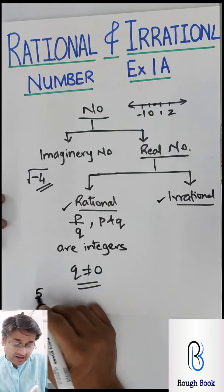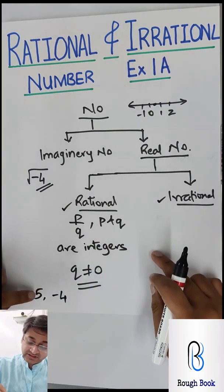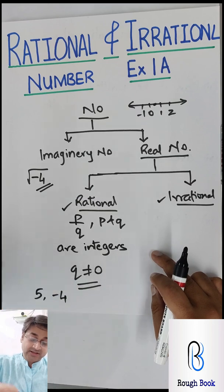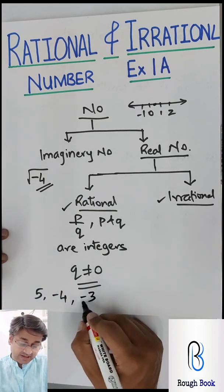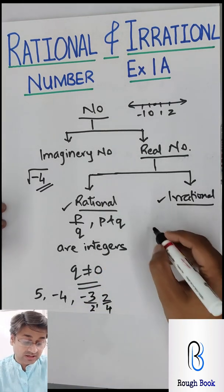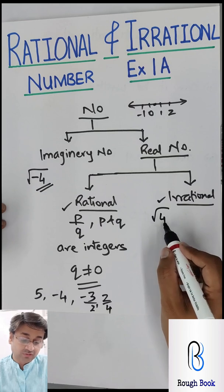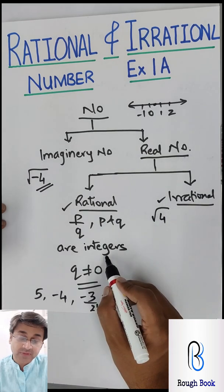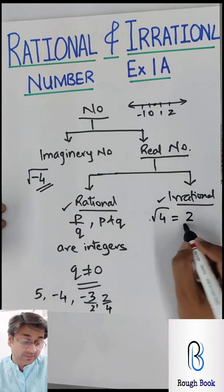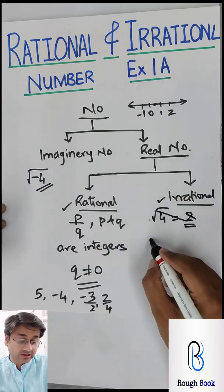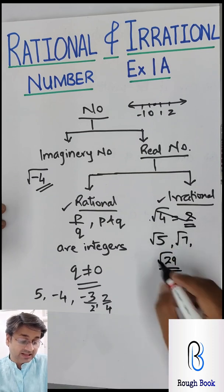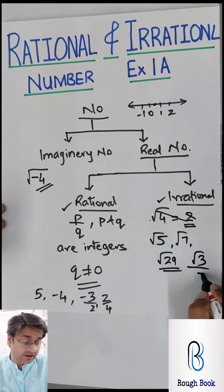Basic examples: 5 is rational, negative 4 also rational because these are all 5 by 1, negative 4 by 1. Both are integers and denominator is not equal to 0. Even minus 3 by 2 or 2 by 4, all these are rational numbers. Now what are irrational numbers? So let's say root 4. Now here root 4 - what is happening is this is not an integer because it is under the root and therefore it is irrational. No sorry, root 4 can be written as 2, so this becomes rational.